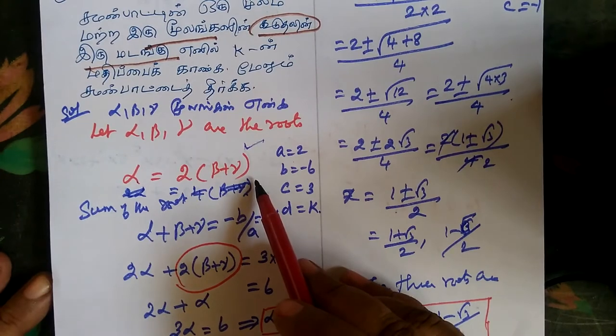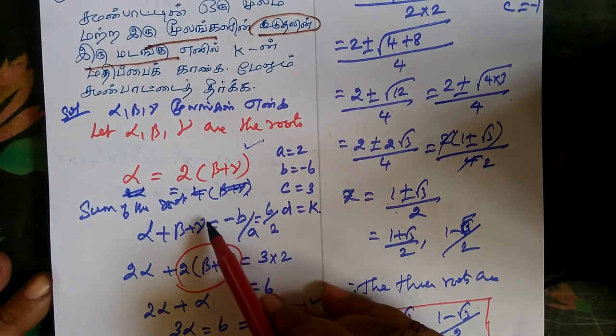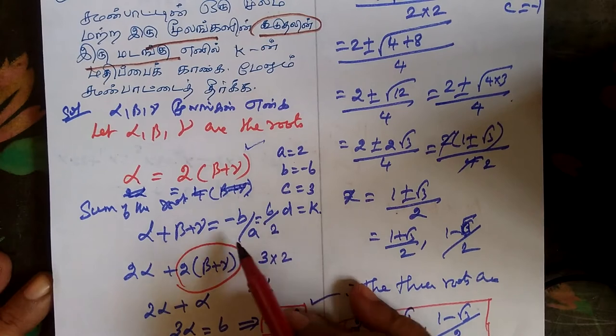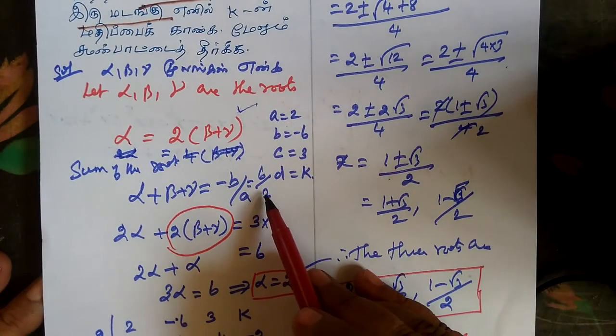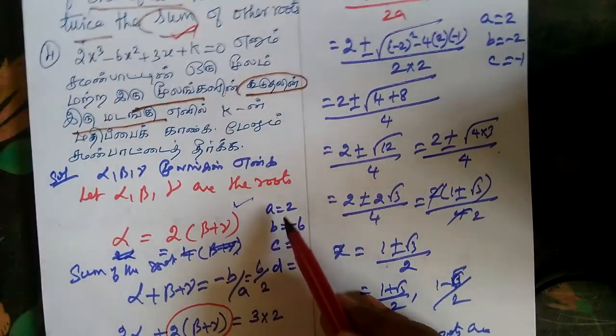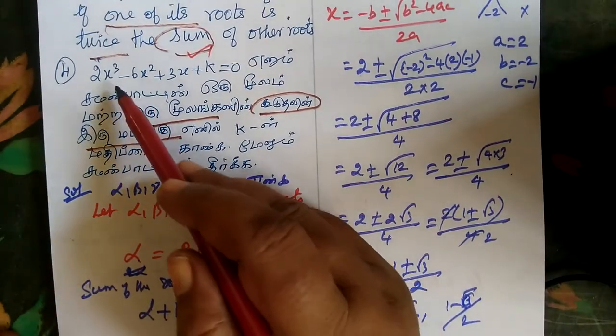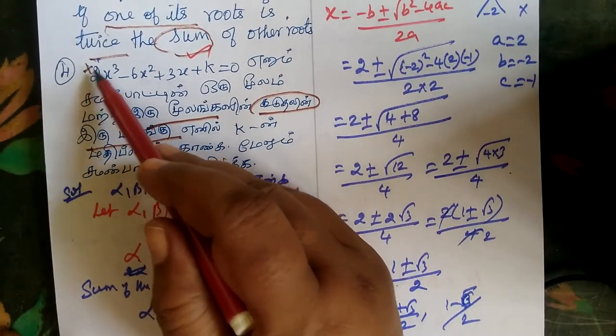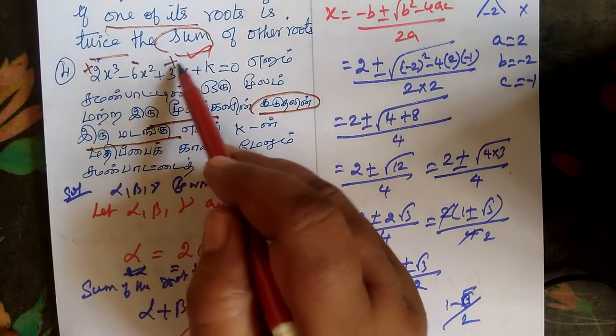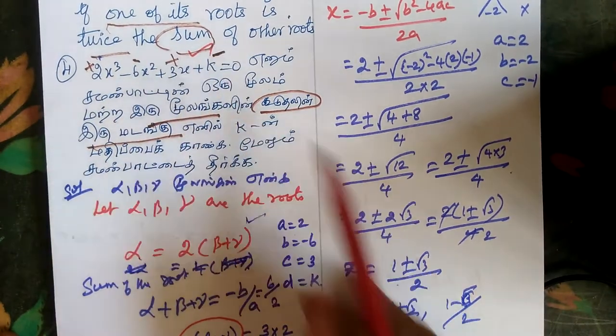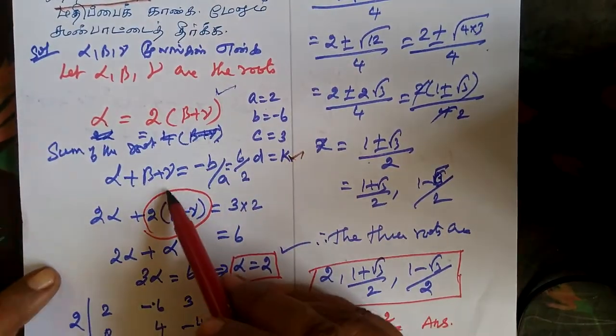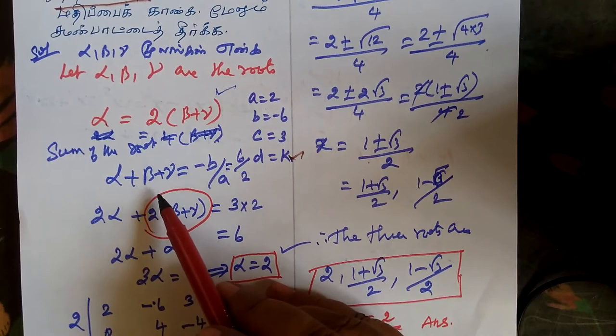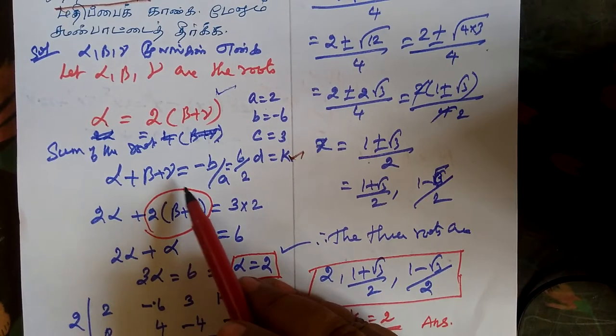Let α equal 2(β + γ). Now sum up the roots: α + β + γ. This value is -b/a. Here a is 2, so we substitute the value: α + β + γ equals -6/2.